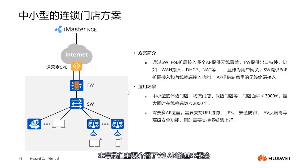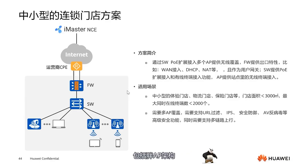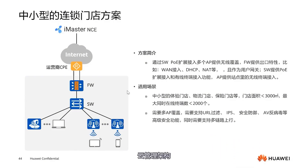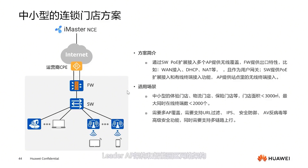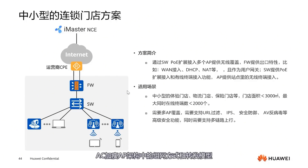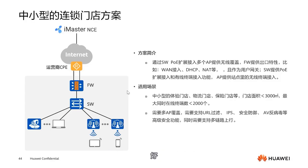In this chapter, we primarily introduced the basic concepts of WLAN, and various WLAN networking architectures, including FAT AP architecture, AC plus thin AP architecture, cloud management architecture, leader AP architecture, and intelligent campus network architecture. We need to learn the networking methods and forwarding models within the AC plus thin AP architecture. Finally, we introduced several typical application scenarios.